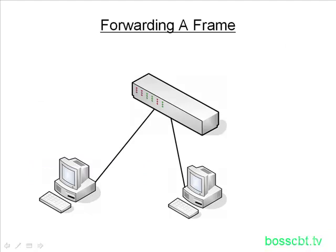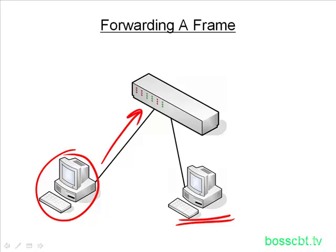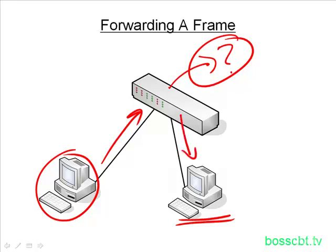So, forwarding a frame — let's take a quick example to flesh out exactly what we mean by that. Let's say this PC here wants to send a frame to this one here. The source PC is going to create an Ethernet frame and put it on the wire, and it gets sent to the switch. The switch then figures out what to do with it, and we're going to look at that process in detail in just a minute. After it determines it should forward this frame and knows where to forward it, it sends it out the appropriate port to the destination PC.